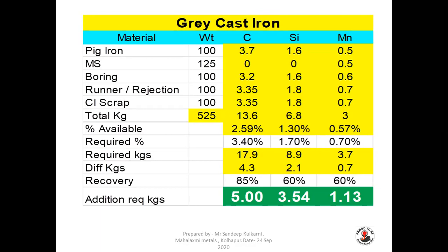You can change the charge mix, and you can change the carbon, silicon and manganese content from your raw material — pig iron, MS and boring — in the master. You can change the required percentage of carbon, silicon and manganese in the bath. You can change the recovery percentage as per your standards or company requirements to get desired values. You can also add copper and chromium to get these values as well.